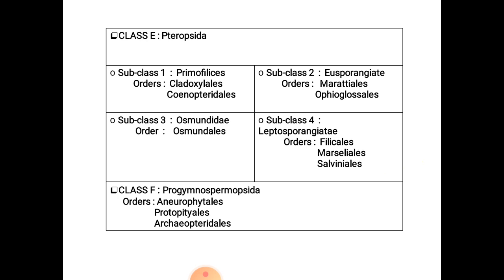Subclass 1 is Primofilices, which includes 2 orders: Cladoxylales and Coenopteridales. Subclass 2 is Eusporangiata, which includes 2 orders: Marattiales and Ophioglossales. Subclass 3 is Ophioglossales with only 1 order. Subclass 4 is Leptosporangiata, which includes 3 orders: Filicales, Marsileales, and Salviniales. Class F is Progymnospermopsida, which includes 3 orders: Aneurophytales, Protopitales, and Archaeopteridales.